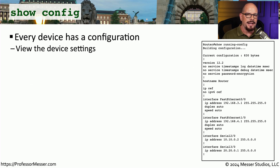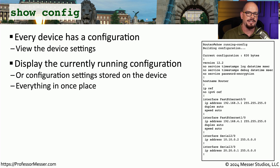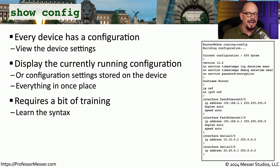When you make a configuration change to a device, this is sometimes done in a web front end, but very often you can view a text-based view of the configuration itself. Some devices only support a text-based view for configuration, and you can view that configuration right at the command line using the show config command. This will show you information about the configuration currently running inside of that device, and you may be able to view configurations stored on the storage drive. Each manufacturer has a different format and syntax when storing configuration information, so you'll need to become more familiar with that manufacturer's specific syntax and layout.